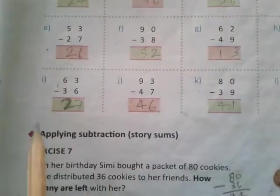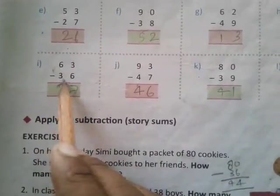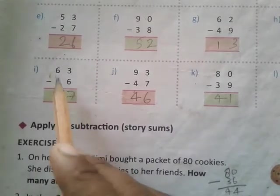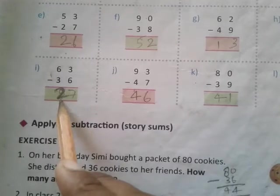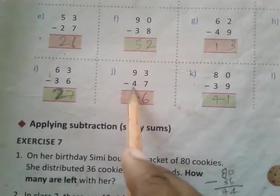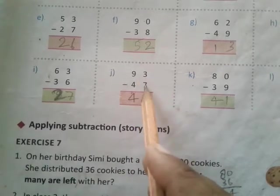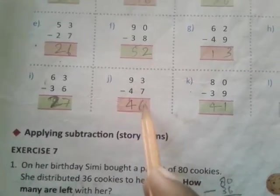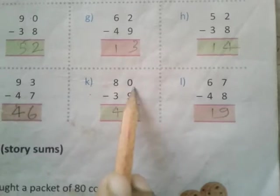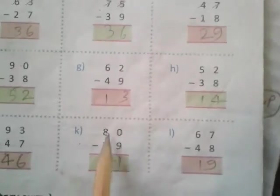52 subtract 38. 12 subtract 8 is 4, 4 subtract 3 is 1, equals 14. I: 63 subtract 36. 13 subtract 6 is 7, 5 subtract 3 is 2, equals 27. J: 93 subtract 47. 13 subtract 7 is 6, 8 subtract 4 is 4, equals 46. K: